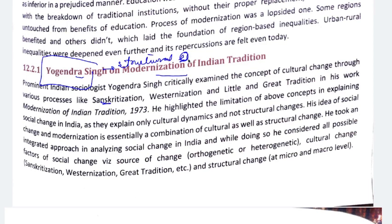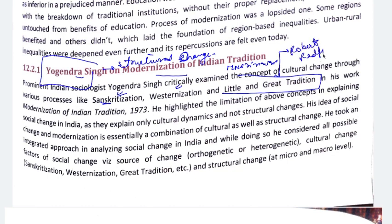What changes are happening in culture? Sanskritization and Westernization are related to M.N. Srinivas. The concept of Little Tradition and Great Tradition — Great Tradition is also called elite tradition, the tradition of big cities and metros. You can remember it as: Little Tradition is rural and Great Tradition is urban society's tradition. Yogendra Singh said these are all things highlighting cultural changes, but we should also focus on structural changes. His idea of social change and modernization is a combination of cultural and structural change.